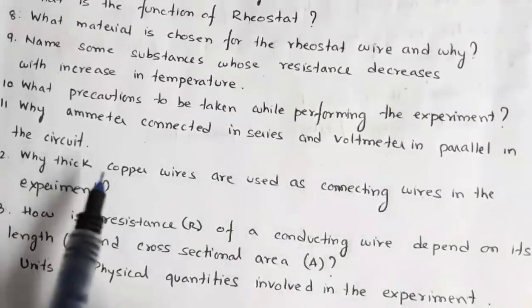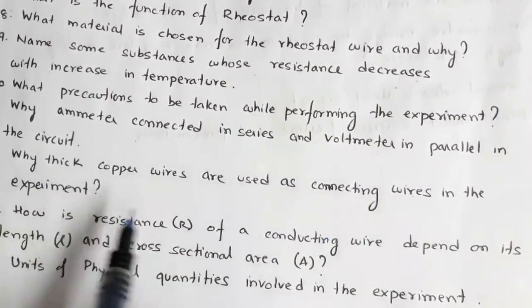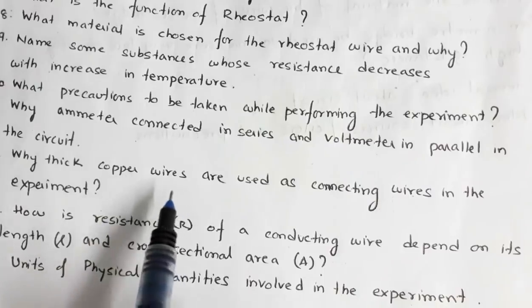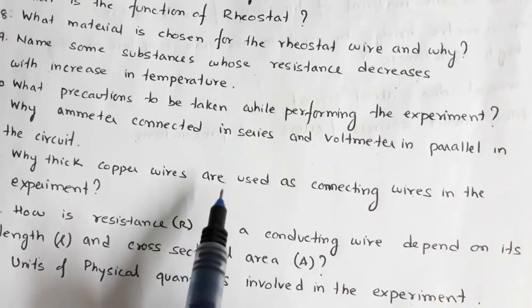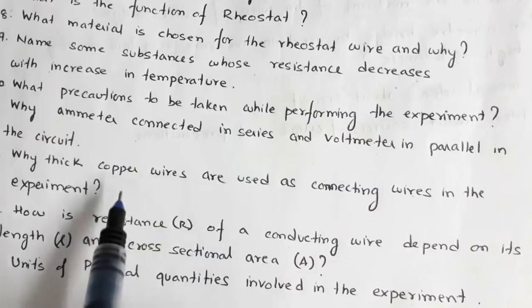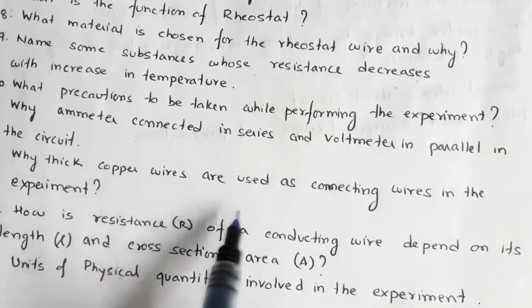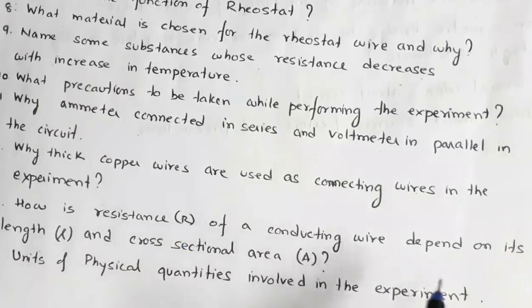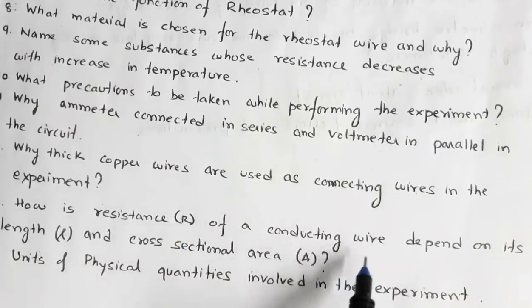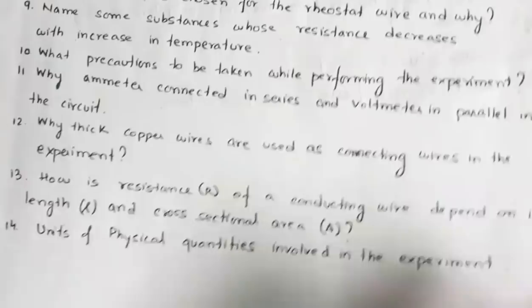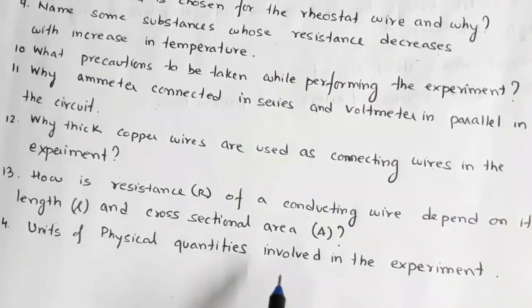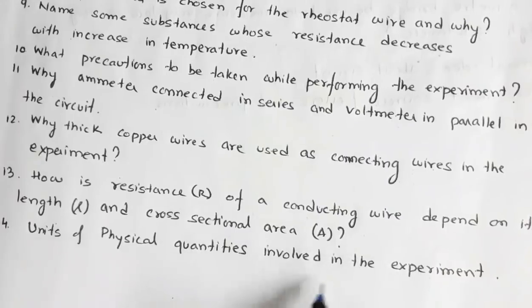Why are thick copper wires used as connecting wires in an experiment? Resistance is inversely proportional to cross-sectional area, so thick wires have low resistance — that is why thick copper wires are used. How does the resistance of a conducting wire depend on its length and cross-sectional area? R = ρL/A. If area is constant, R is proportional to L; if length is constant, R is inversely proportional to area.